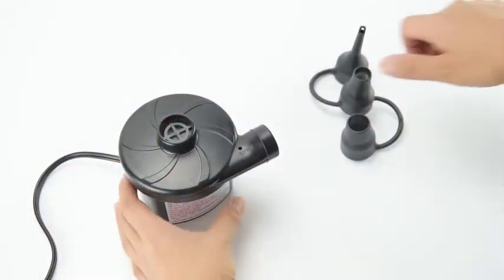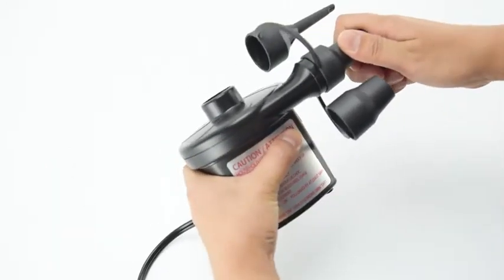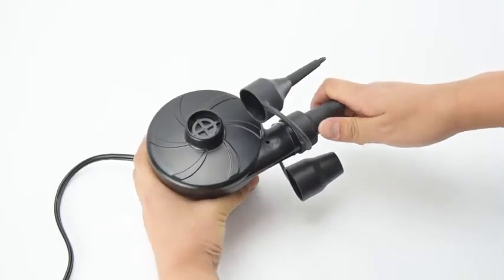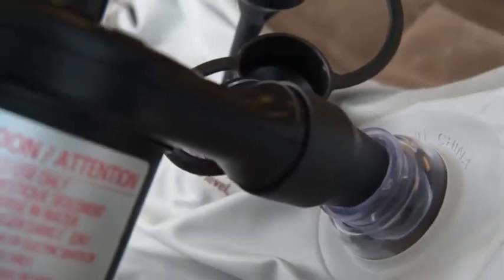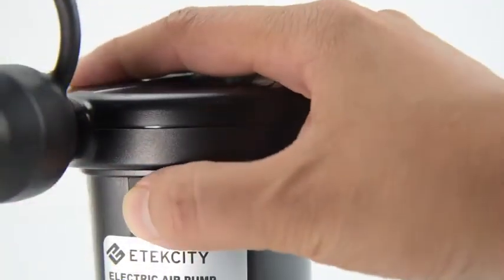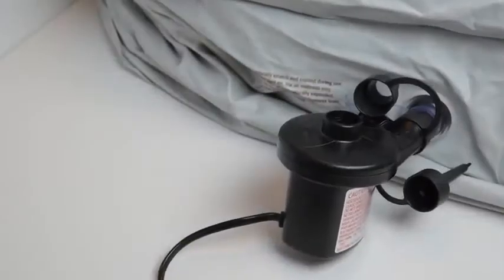To use your air pump, select the appropriate nozzle for the item you are inflating and attach it to the inflation port. Plug the air pump into an electrical outlet, then connect the nozzle to the item's air valve. Turn on the air pump and fill your item with air until it has fully inflated.